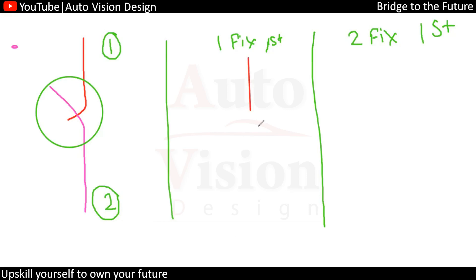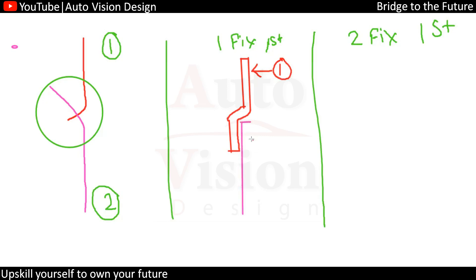This will be the part we are going to have, and in that case this will be nothing but the interface below. This is how we are going to get the interface on the part. Now we are going to have Part Two assembled — something like this.